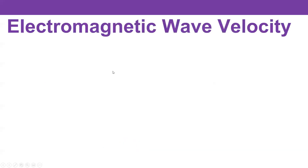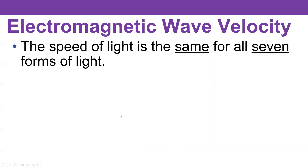So if you see the phrase 'electromagnetic wave velocity,' think about an easier way to say that. It kind of sounds like technobabble. Another way to say this is the speed of light. And one of the cool things about the speed of light is that it's the same for all seven forms of light.